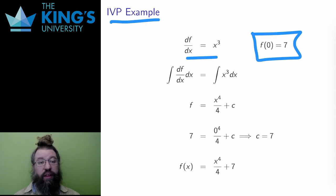The integral on the left cancels the derivative, leaving just f. On the right, this is a reverse power rule. The antiderivative is x to the 4 over 4 plus a constant. Then the integration step is finished.